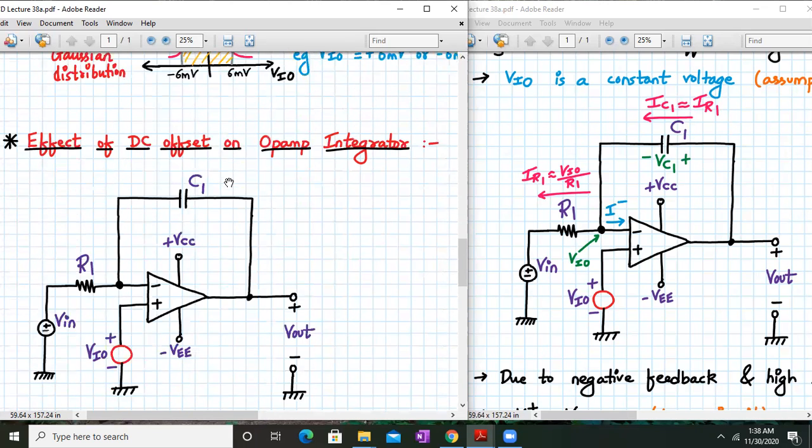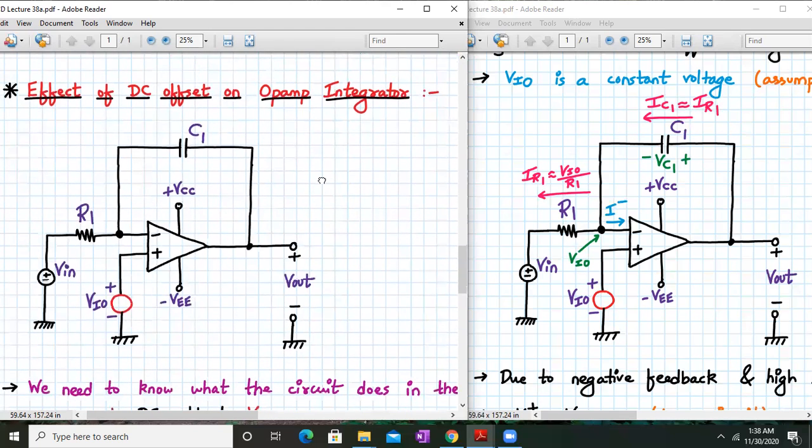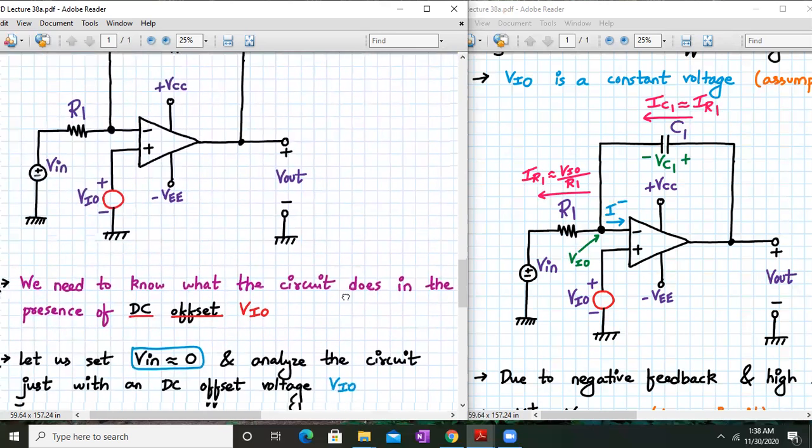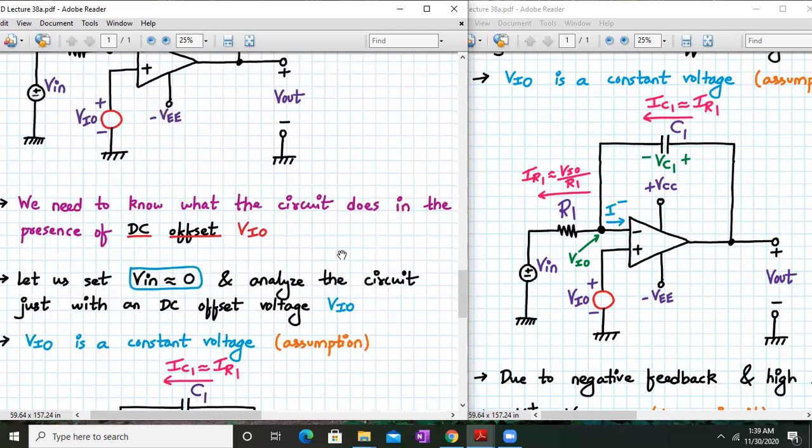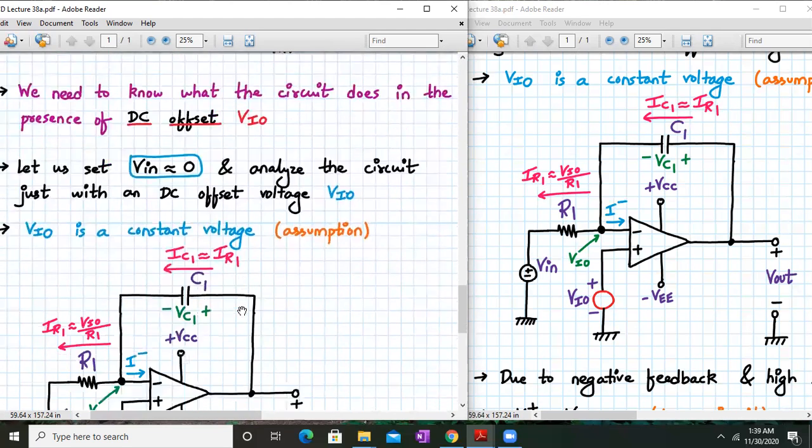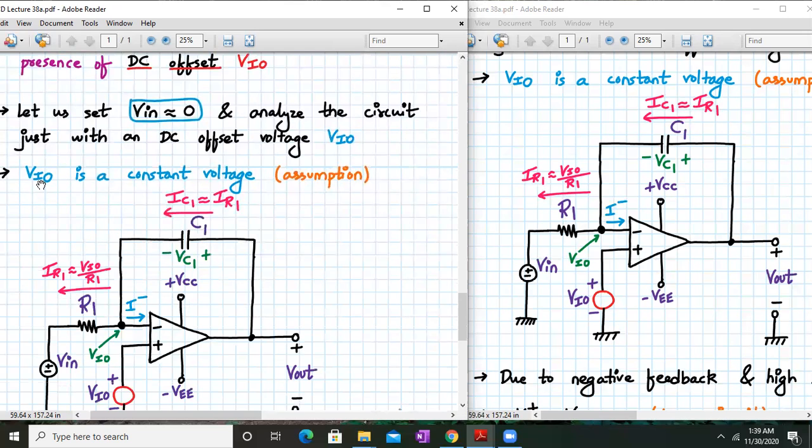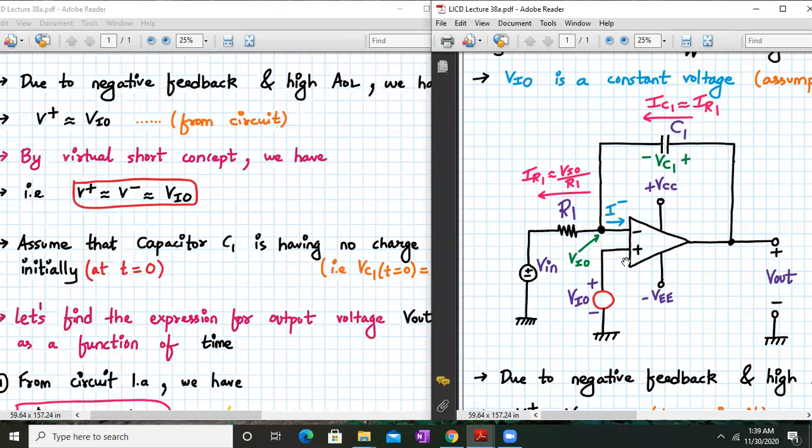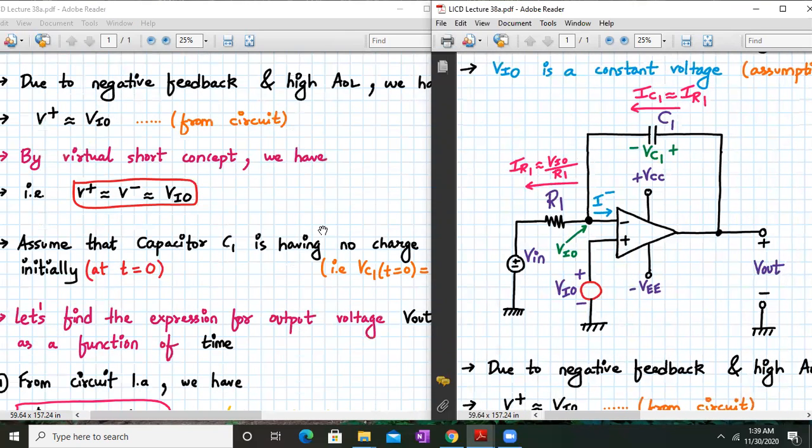So now let's study the effect of DC offset on Op-Amp integrator circuit. Here we have Op-Amp integrator with capacitor C1 and R1 and VIN applied to the inverting terminal. We have just incorporated input offset voltage VIO between the non-inverting terminal and ground. Next we need to know what the circuit does in presence of this DC offset voltage. We will refer the circuit which is given on the right-hand side explicitly for our derivation.